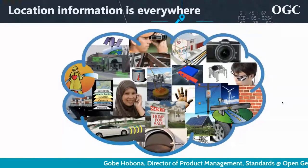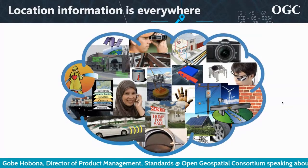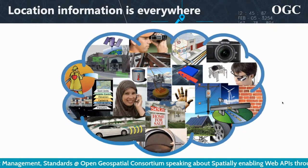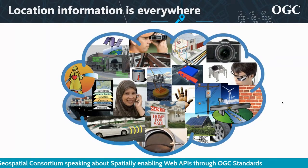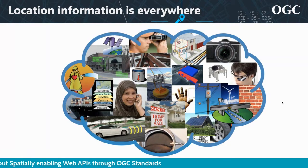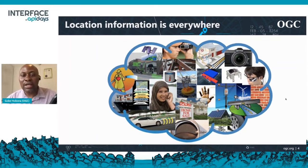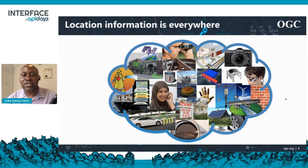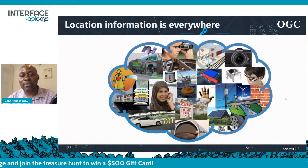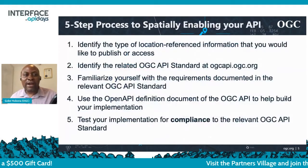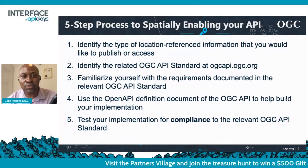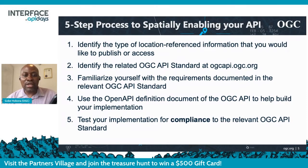Location information is everywhere, and every single day we make use of geospatial information in several different aspects. One challenge is how does one spatially enable a web API to publish location data and enable an application to discover that API, but also to enable the API to integrate location reference information. Those are challenges that API developers encounter every single day. This presentation will talk about how to spatially enable your web APIs using a five-step process to do so using open geospatial standards.